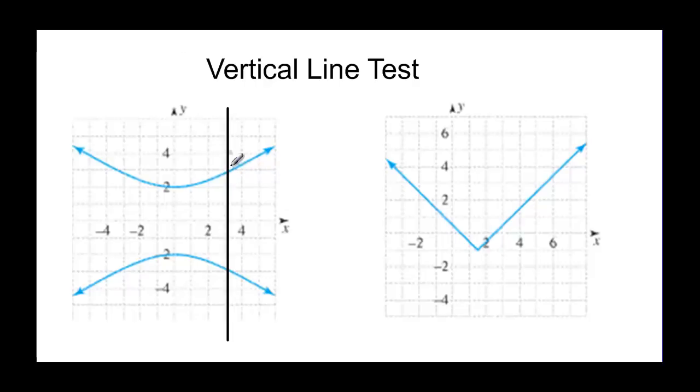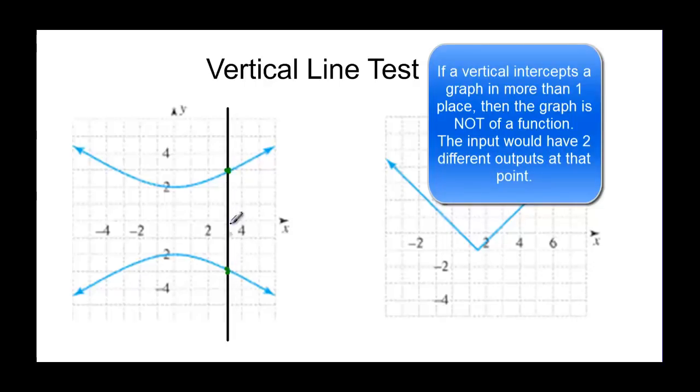Because if you see this vertical line right here, this point right here and this point right here are on that vertical line. So the input here looks like it's 3, but it has two different outputs. It has an output of 3 and it has an output of negative 3, so it's not a function.